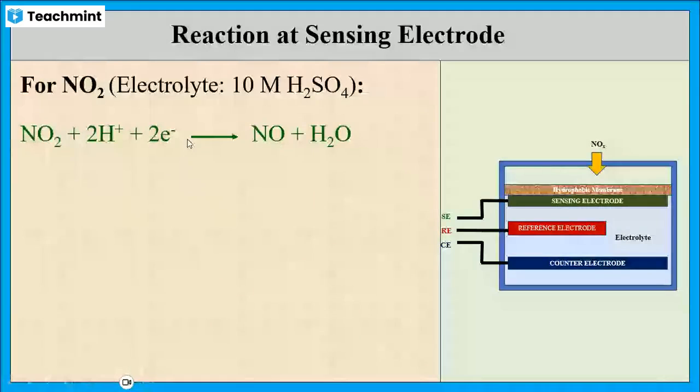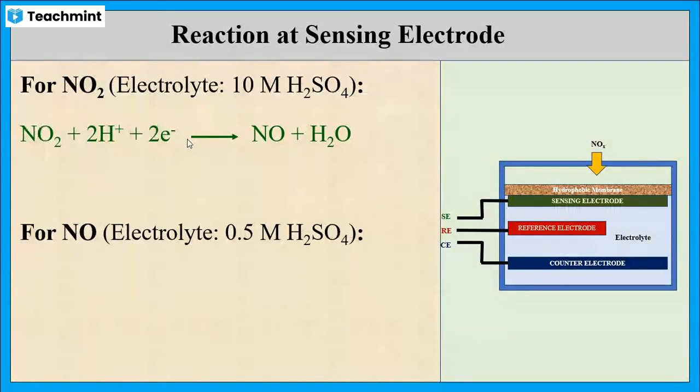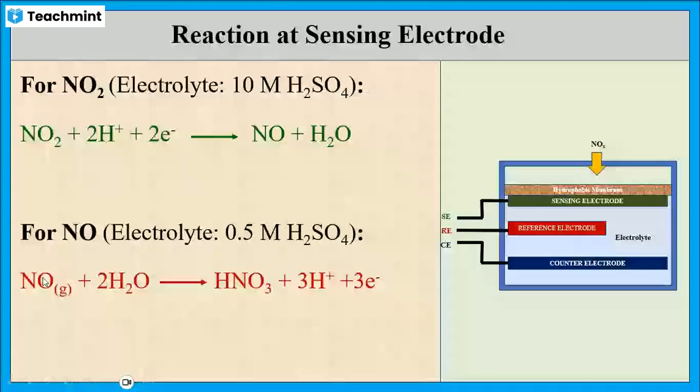If we need to detect nitrogen oxide then we have to use 0.5 molar sulfuric acid as electrolyte. The nitrogen oxide undergoes oxidation with the working electrode to produce nitric acid. And this is the oxidation reaction where the electrons are liberated.